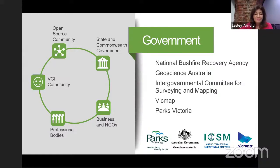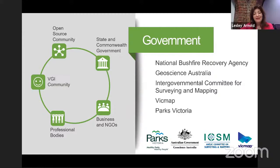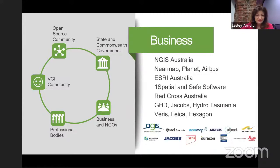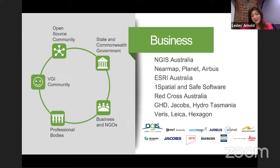We had the support of the Intergovernmental Committee for Surveying and Mapping — the lead mapping agencies in each state. Hands-on were Geoscience Australia, VicMap and Parks Victoria. Parks Victoria are going to be the custodians of the data that was collected. Of course, it's always available on OpenStreetMap, but the data is now also being used by government — and that's quite a first, as we don't often hear of crowdsourcing exercises where government has embraced that data within their authoritative sources.